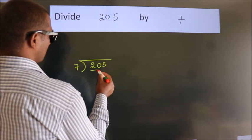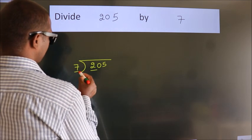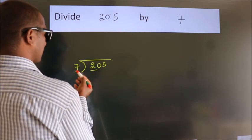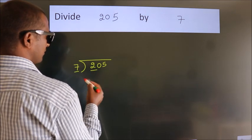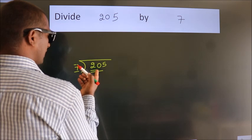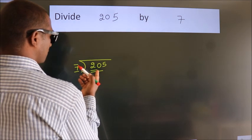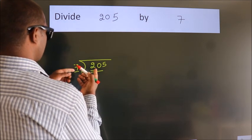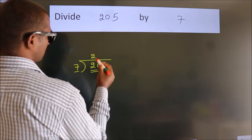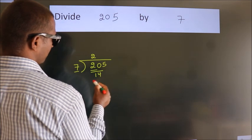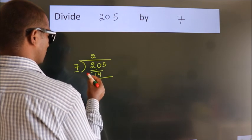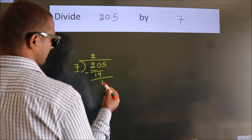Here we have 2, and here 7. 2 is smaller than 7, so we should take 2 numbers: 20. A number close to 20 in the 7 table is 7 twos 14. Now we subtract and we get 6.